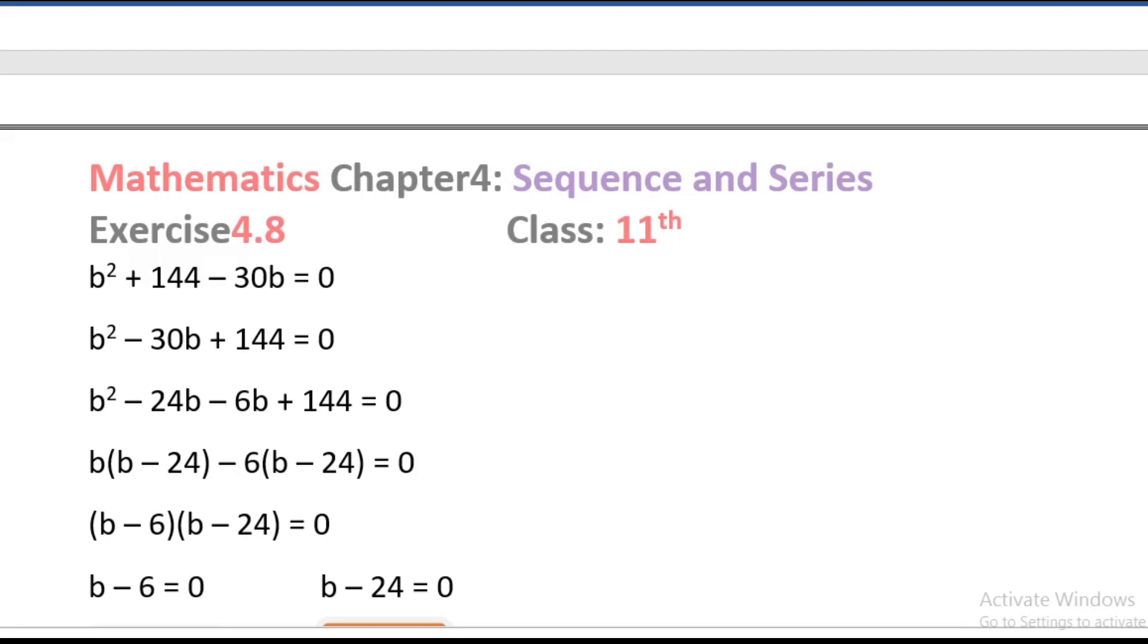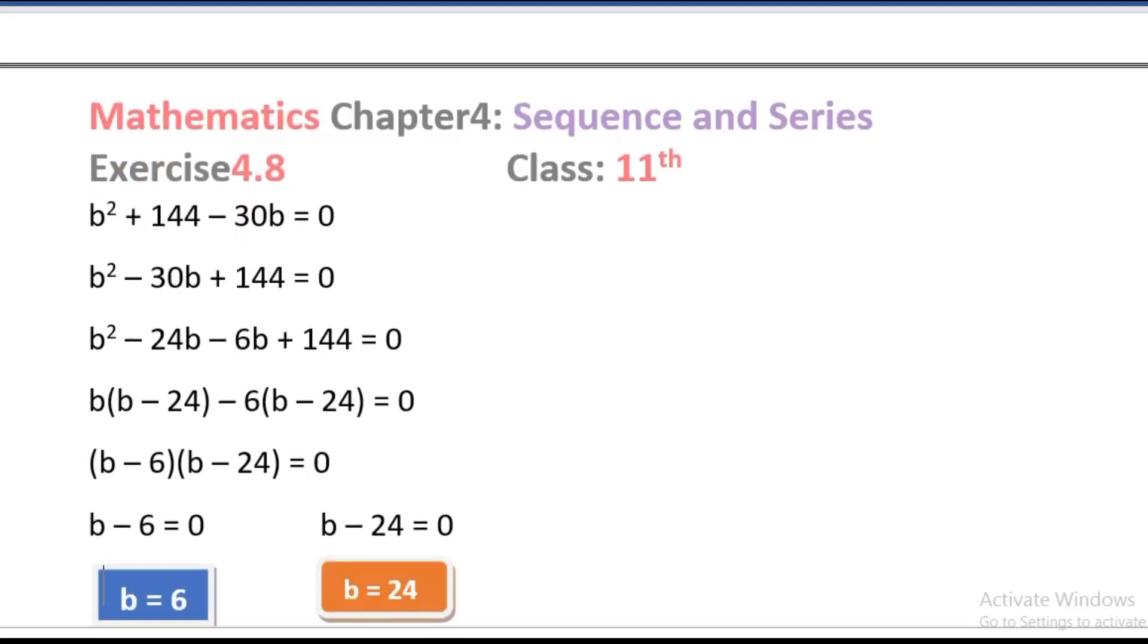b minus 6 equals 0, so b equals 6. Second factor, b minus 24 equals 0, so b equals 24.